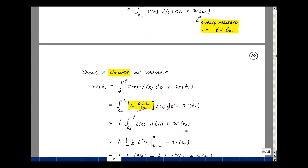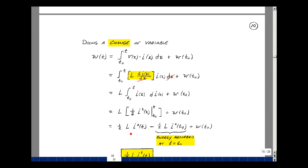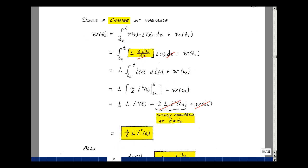Evaluate it from the upper limit minus the lower limit plus our energy absorbed at time t equals t0. Upper limit is 1 half times L times i squared of t, and we're going to subtract the lower limit, so it's 1 half L times i of t0 squared plus w at t0. What is this term? It's the energy absorbed at t equals t0, but that's what this is. They subtract and cancel. The energy absorbed by an inductance is 1 half L times i squared. This is always a positive number.